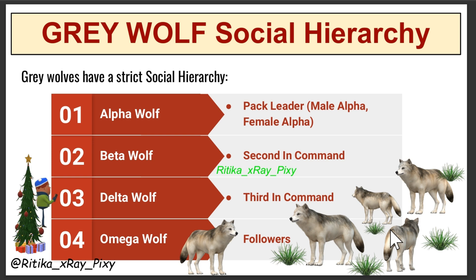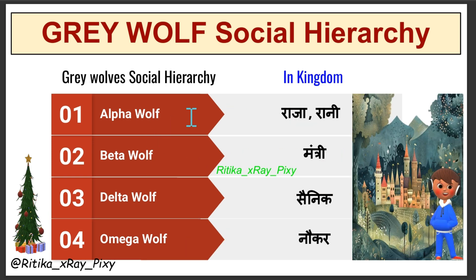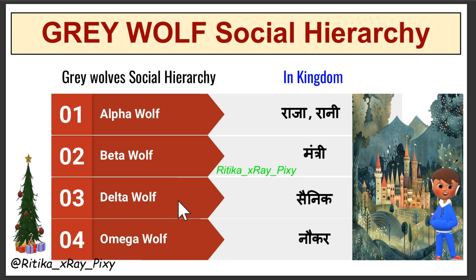So in summary: alpha wolf is first in rank — the leader. Just like in a kingdom we have a raja or rani, we have male alpha and female alpha. Second is beta wolf — second in command, like a mantri (minister). Then delta wolf — third in command, like sipahi (guards). Then omega wolves — they are followers, like servants in the kingdom. This is the social dominant hierarchy of grey wolves.